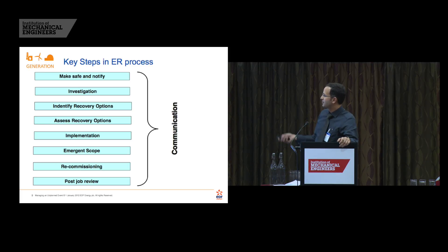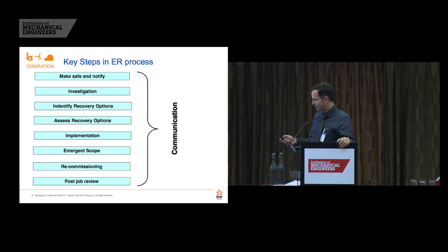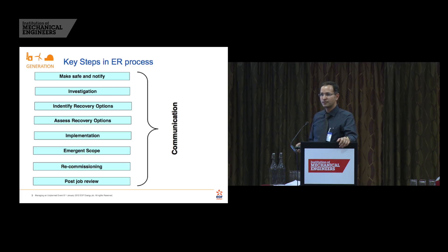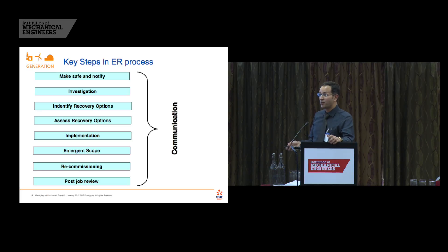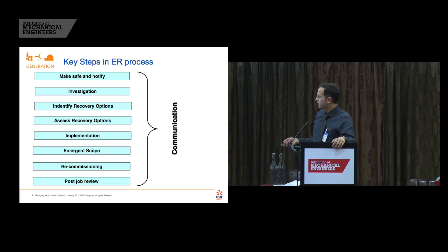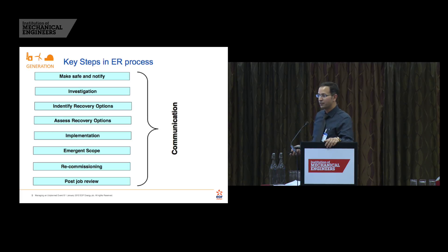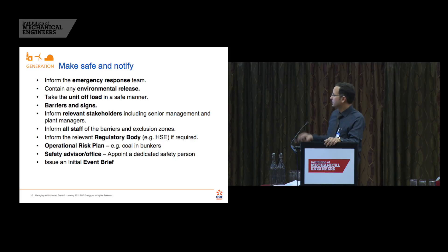These are broadly the steps we followed. I don't claim this is the standard process, but it worked well for us and we have used it on other incidents since. The steps are: make the area safe, initiate an investigation, identify recovery options, assess recovery options, get into the implementation phase, address emergent scope, recommissioning, and then a post-job review. Critical right through the process is maintaining effective communication.